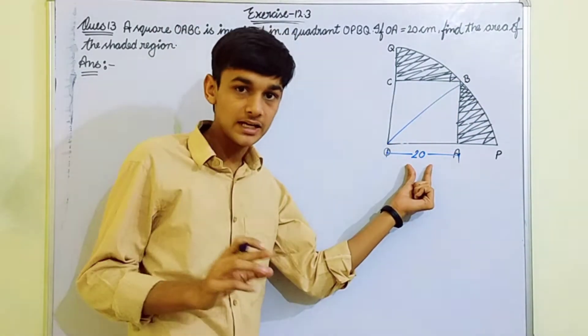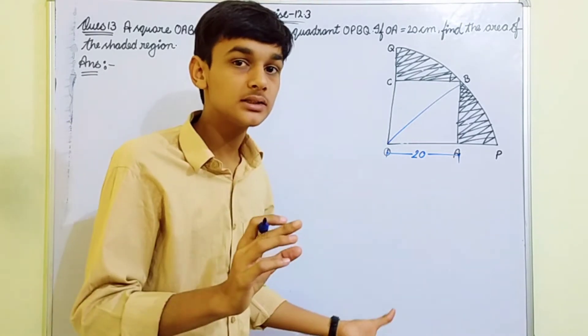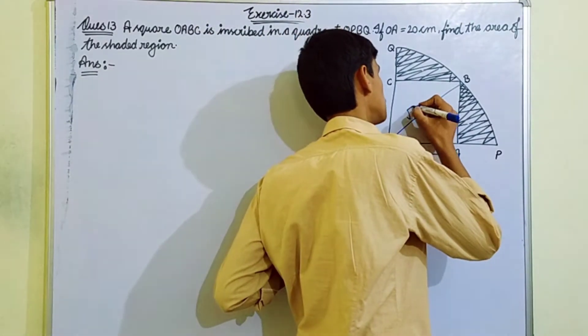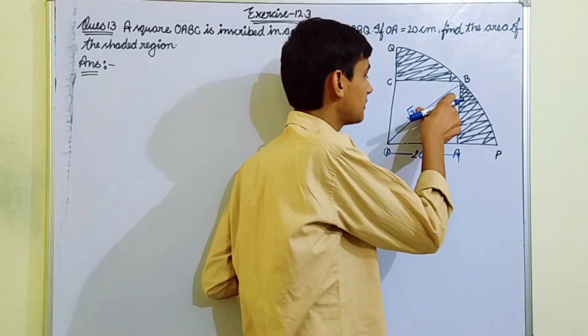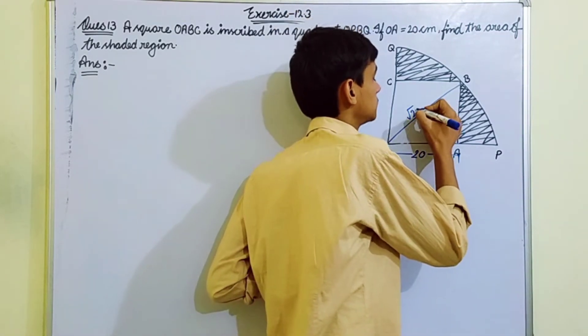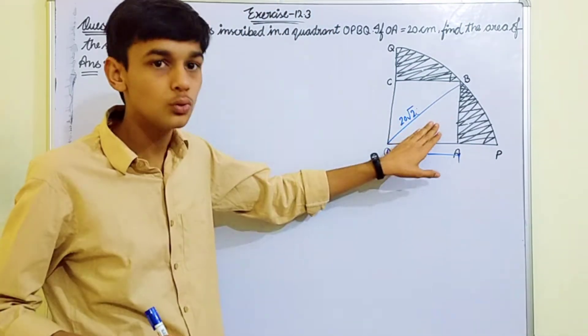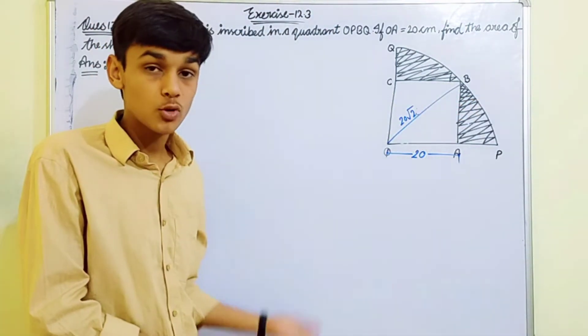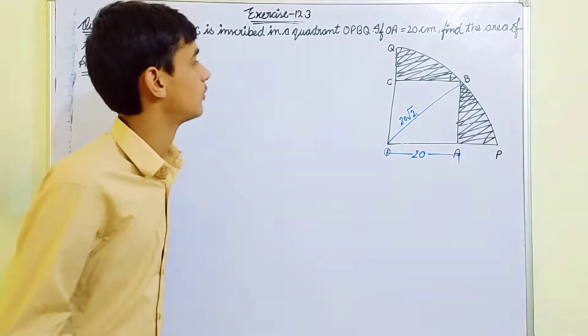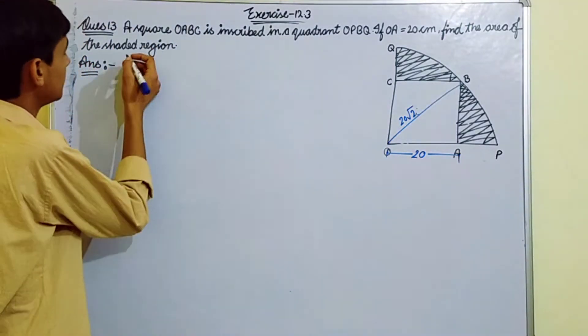It's both the radius and the diagonal. If the side is 20 cm, and the diagonal of a square is side times root 2, so we get 20 root 2 as the diagonal, which is also the radius. Let's find out the side of the square first.